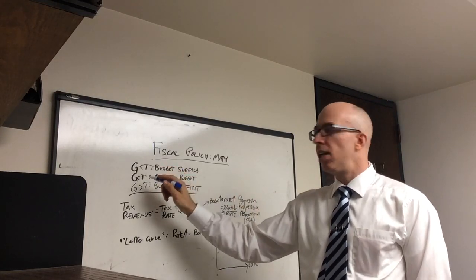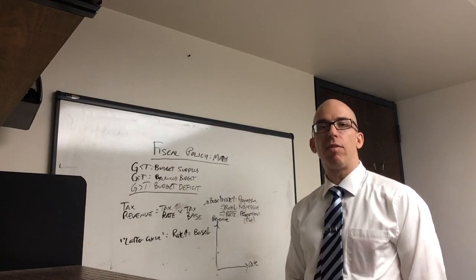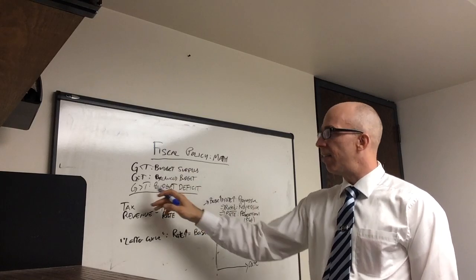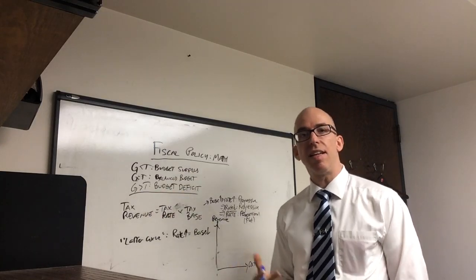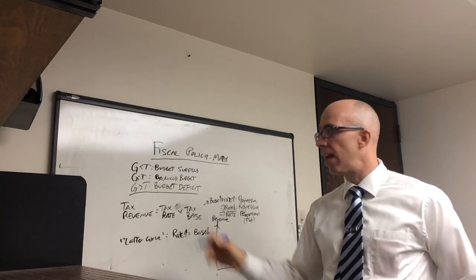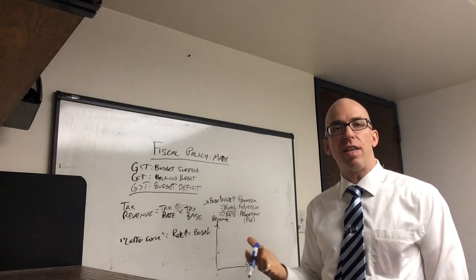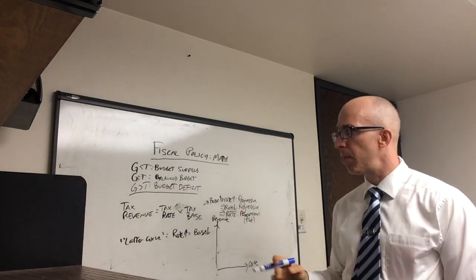Now, what if they're not equal? If tax revenue is greater than government spending, then you have extra money, and that's a budget surplus. And if government spending is greater than taxes, then you have a need to borrow, and so that is a budget deficit. So those are the three accounting equations that you might see when you talk about taxing and spending.